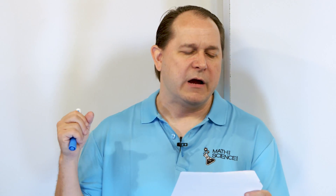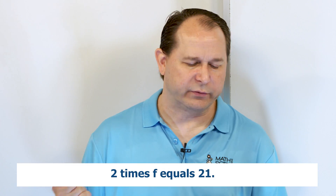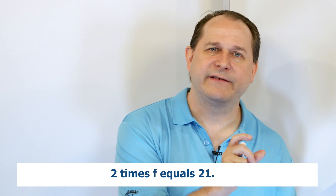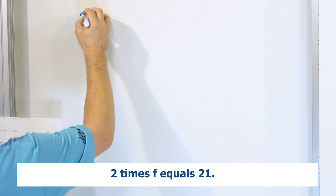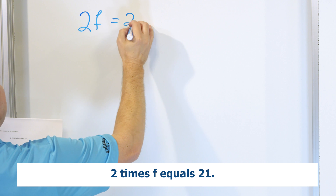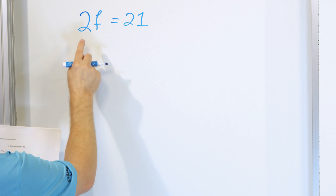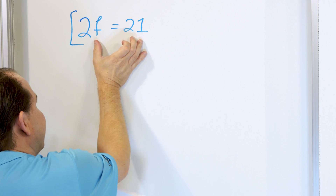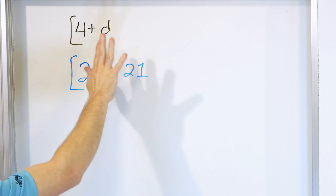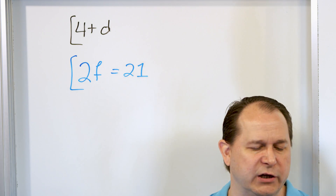Let's read the next one and write down the math. 2 times F equals 21. On the left-hand side of the equal sign we're saying 2 times F, and on the right-hand side we're saying 21. It's a direct one-to-one reading of the words: 2F = 21. This is an equation because there's an equal sign, whereas the previous example was an expression because there was no equal sign.